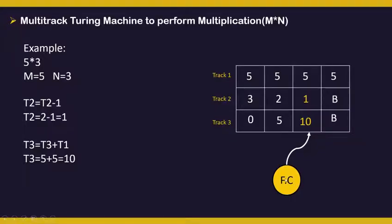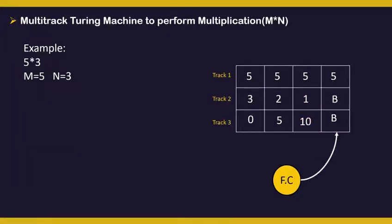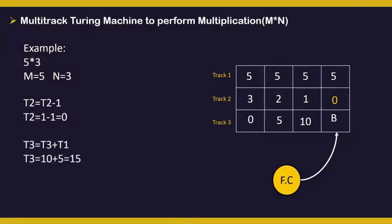The final controller moves rightward. Now we change the value in track 2 as t2 - 1, that is 1 - 1 = 0. And the value in track 3 will be updated to 15, as t3 = t3 + t1, that is 10 + 5 = 15. As you can see, we have got 0 in track 2, so we stop. And we have got 15 as the result in track 3.